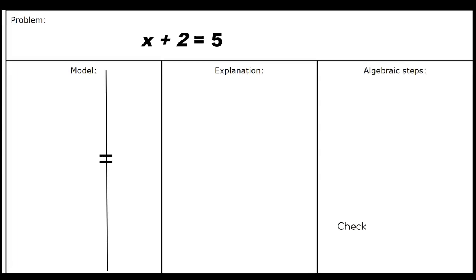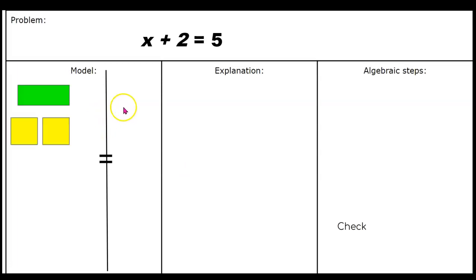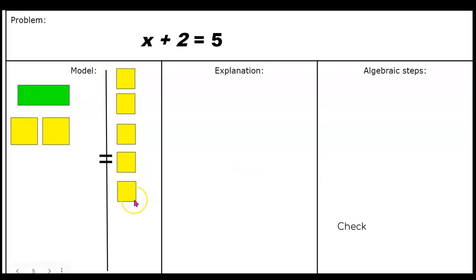Let's see what X plus 2 equals 5 looks like. In order to model this, you will need one green algebra tile and two yellow chips on the left side of the equal sign, and five yellow chips on the right side of the equal sign. This is X plus 2 equals 5.